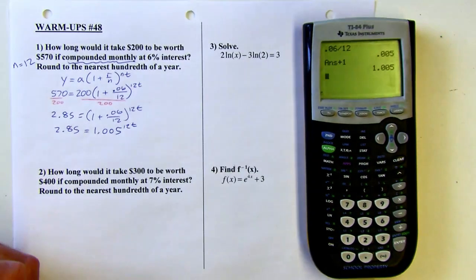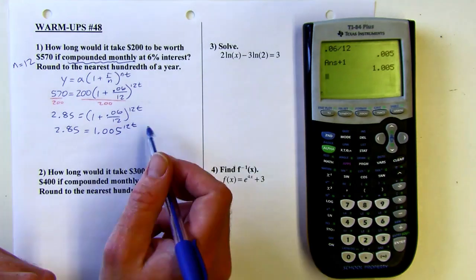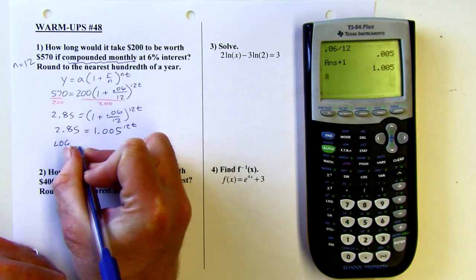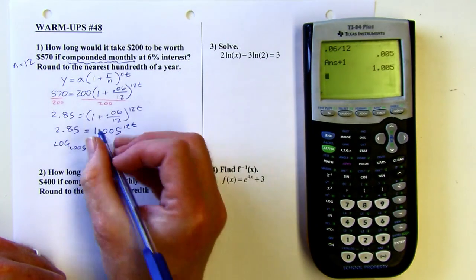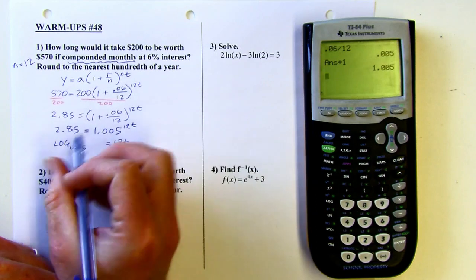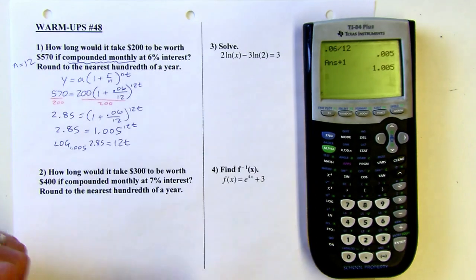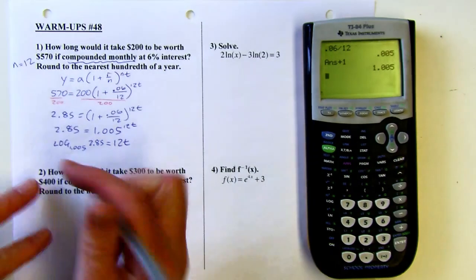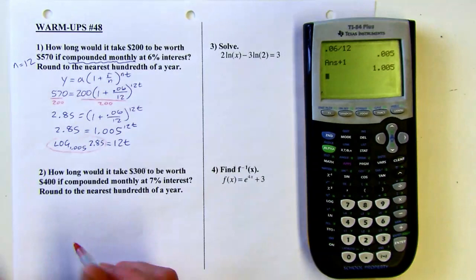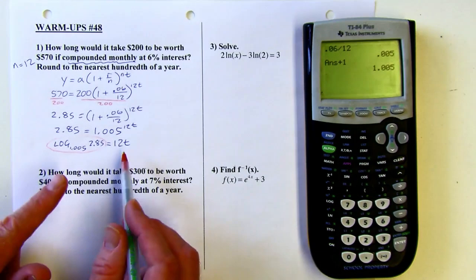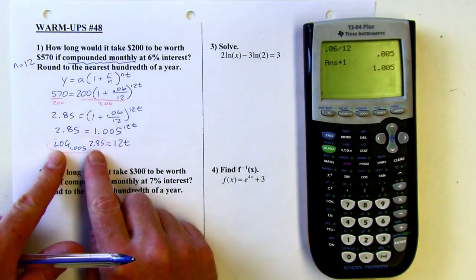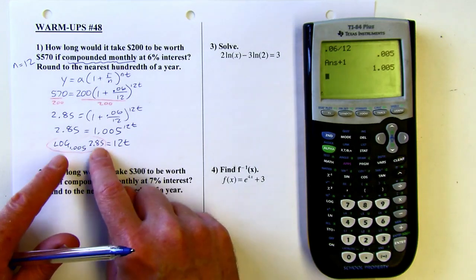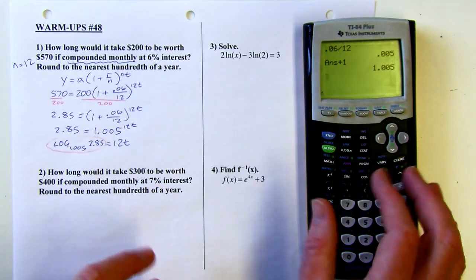So that's pretty simple. 1.005 to the 12t. At this point, I need to use logs in order to isolate the variable. So that's what I'm going to do. I'm going to rewrite this in log form. So my base is 1.005, so that goes in that position. The exponent is going to get isolated, so that's going to be over here, and the 2.85 is going to be the contents of the log. So now I've got it this far, and this side of the equation I can simplify in my calculator. And once I get that, I'm going to divide by 12 to get my final answer. So I'm going to use change of base formula because I have to use base 10 on my calculator.